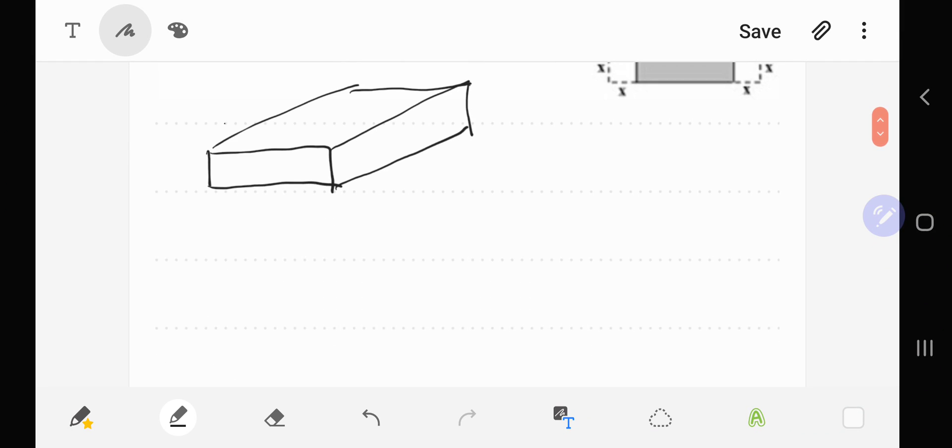Now our goal here is to find a formula for the volume in terms of x. Remember that the volume formula for a box is length times width times height. So we're going to have to find the length, the width, and the height of this box.